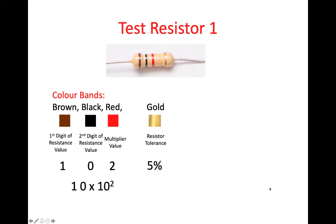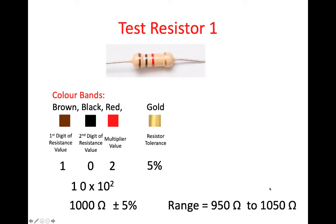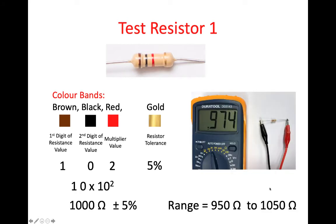So it's 10 multiplied by 10 to the power of 2, plus or minus 5%, which is 1,000 ohms plus or minus 5%. That gives you a range of 950 ohms to 1,050 ohms. When we measured this resistor, we got 974 ohms, which falls within the range.